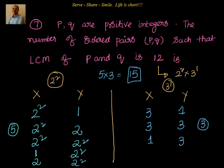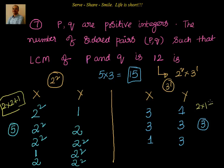Observe the pattern: for 2² we got 5, and for 3¹ we got 3. The relation is simple: if the highest power is 2, then the count is 2×2+1 = 5. If the highest power is 1, the count is 2×1+1 = 3. So the total number of ordered pairs is 15.